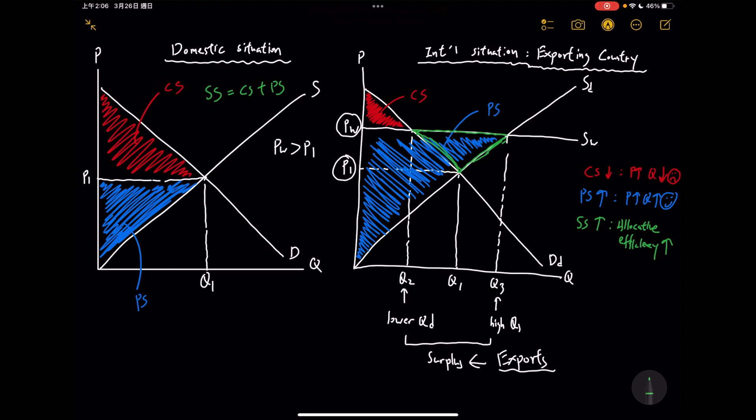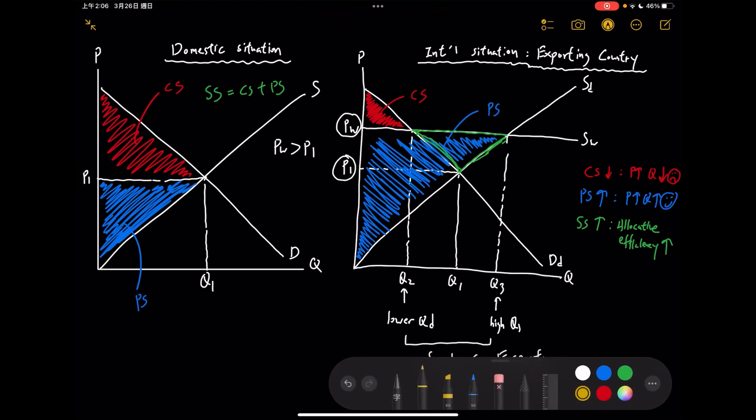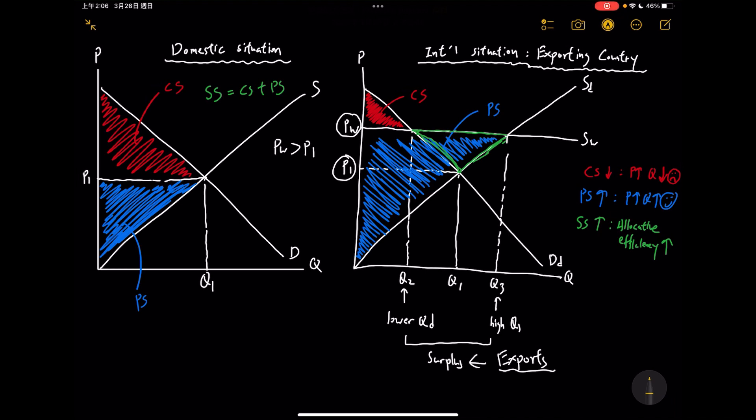You can also look at the change in total revenue as well, the change in total revenue for the exporting country, the producers. You can see that in the domestic situation, the total revenue is basically, we all know, P1 times Q1. That's before trade. But after trade, we could see that we are now setting a higher price at a higher quantity. Definitely after trade, the producers are gaining more as well.